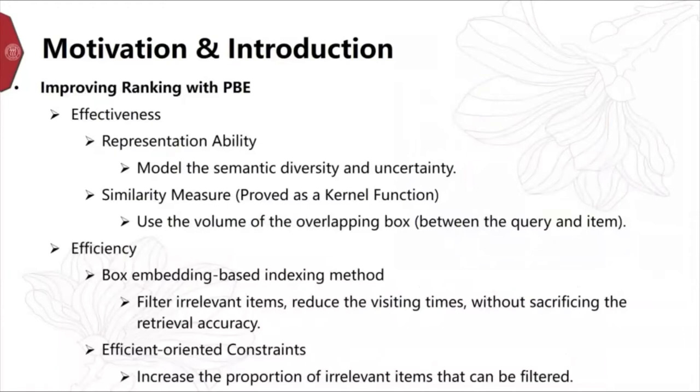For effectiveness, the representation ability can be used to better model the semantic diversity and uncertainty. Besides, the similarity measure, which is the volume of the overlapping box, is proved as a kernel function. For efficiency, we propose a box embedding based indexing method which can filter irrelevant items and reduce the visiting time. We can also optimize the ranking task with efficiency-oriented constraints. It can increase the filtering proportion of irrelevant items.